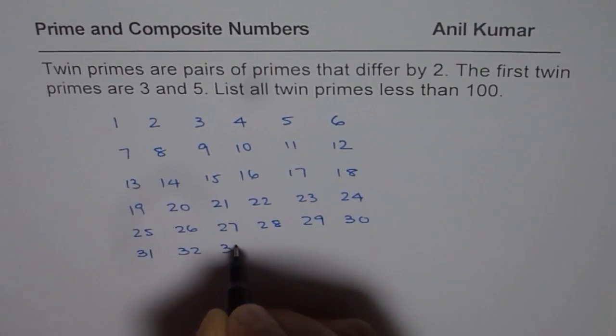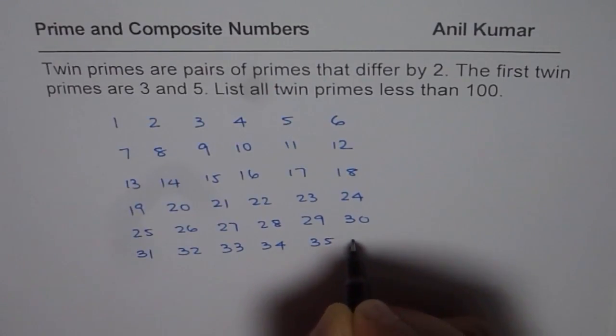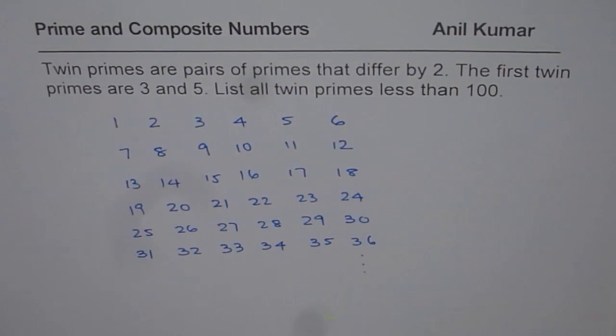So that is an exercise for you. You can actually write all these numbers and continue them till 100. So just continue. So I will do some so that you understand how we can easily, without skipping any twin prime, figure it out.